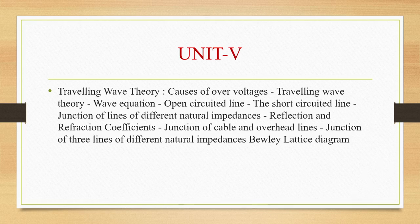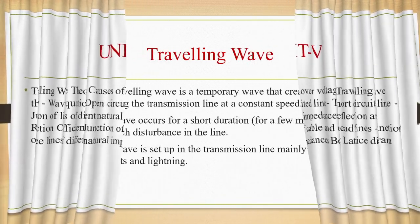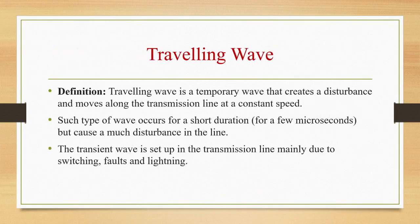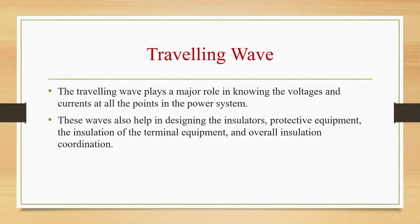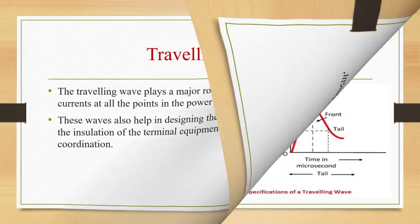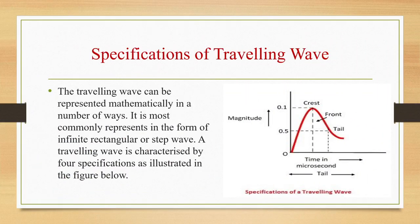Let us see the definition of a traveling wave. A traveling wave is a temporary wave that creates a disturbance only for a very short period — maybe a few microseconds — but it will cause much disturbance in the transmission line. Transient waves are set up in the transmission line due to switching, faults, and lightning. Traveling waves play a major role in knowing the voltages and currents at all points in the power system and also help in designing insulators, protective equipment, insulation of terminal equipment, and overall insulation coordination.